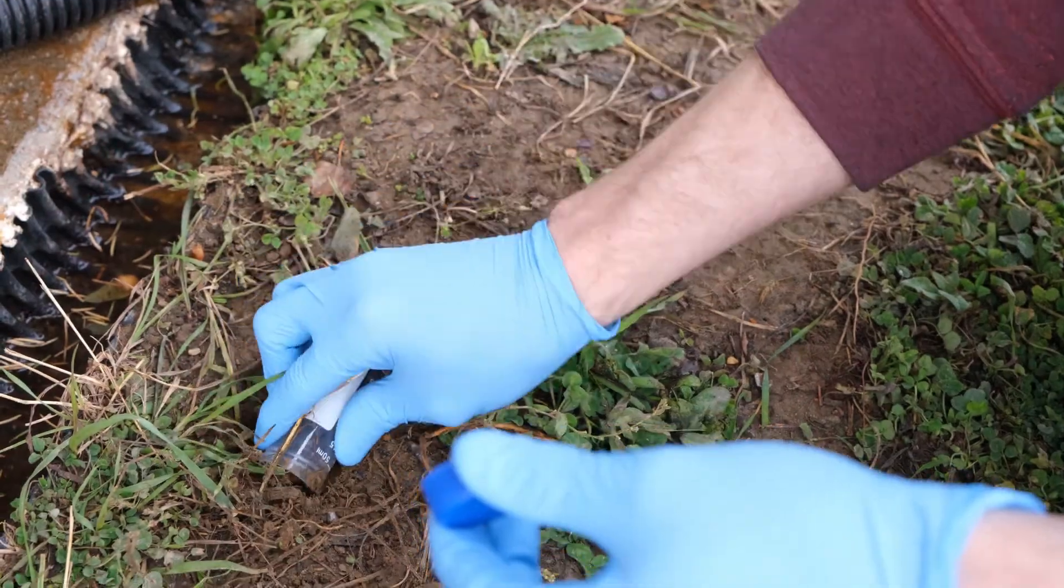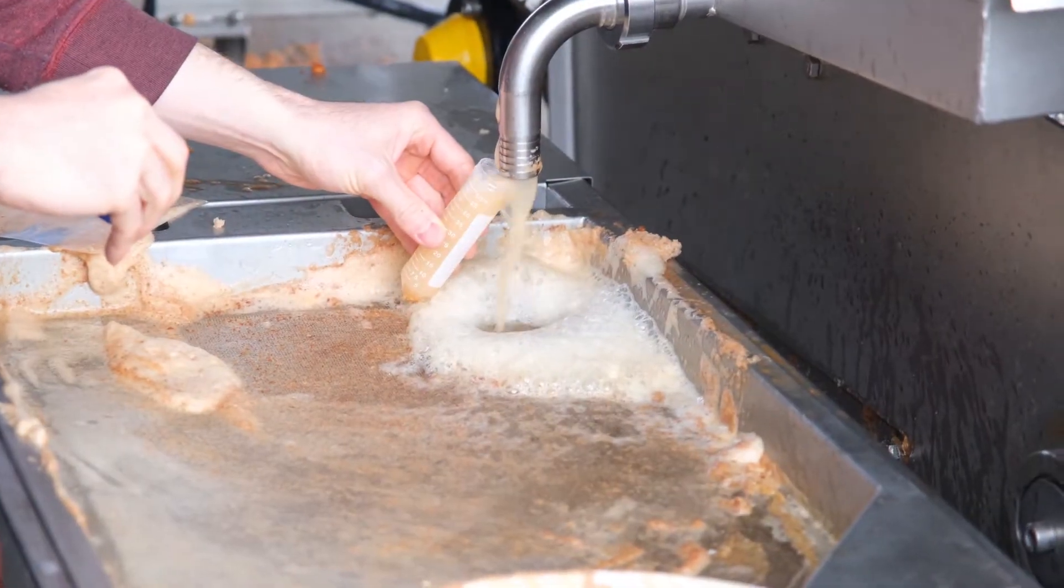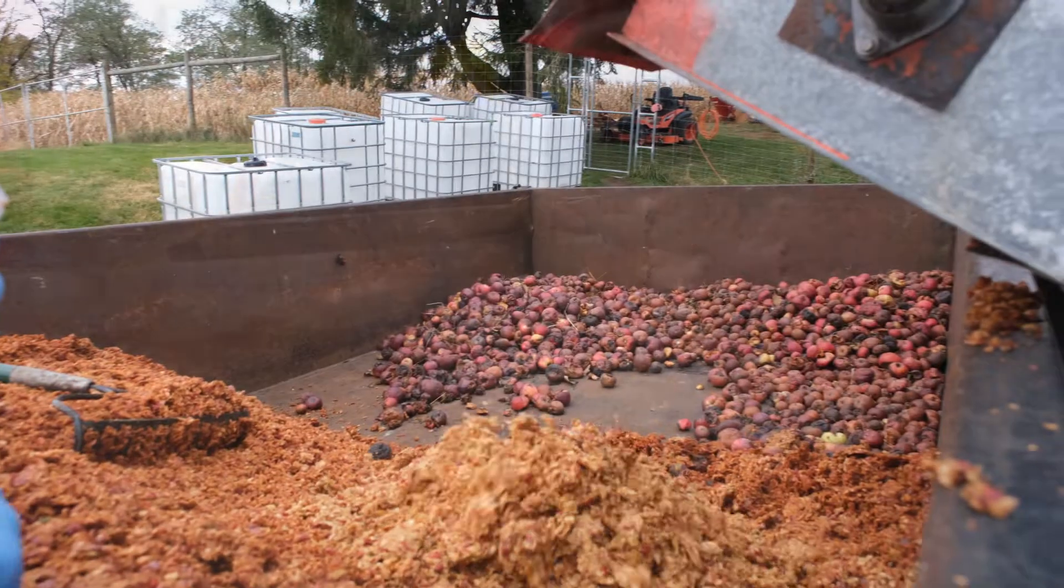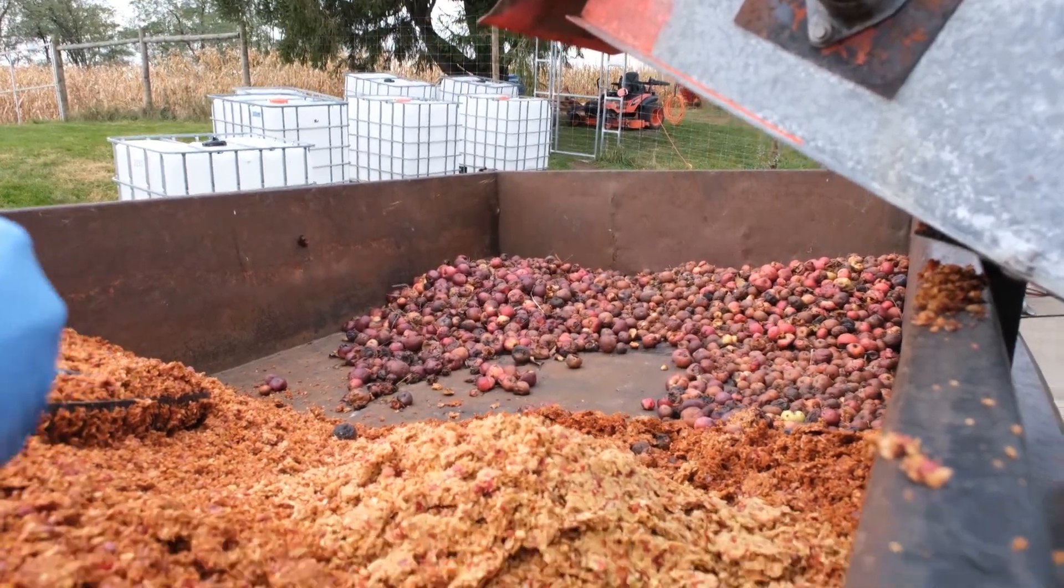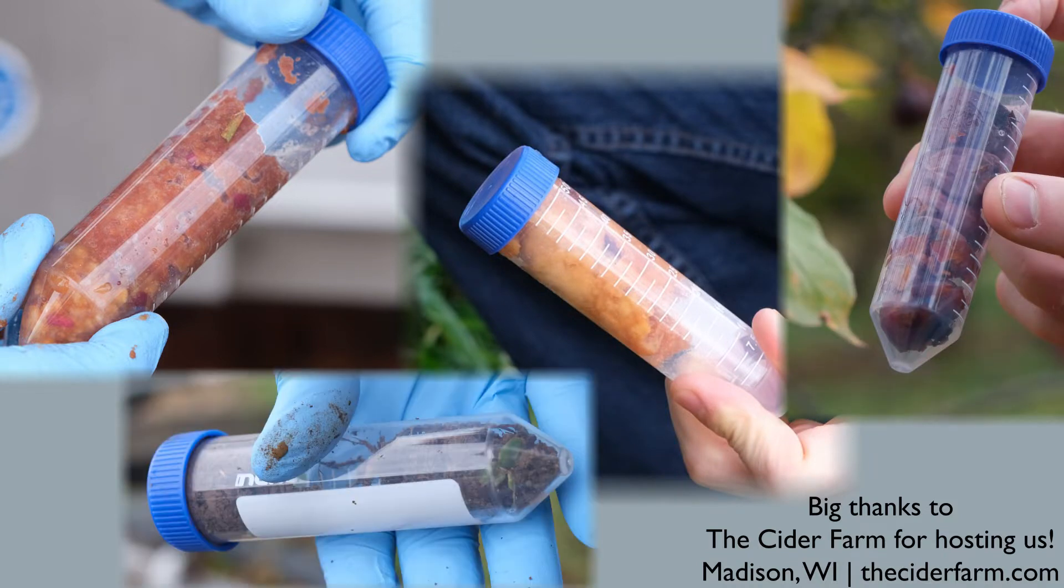Phages live inside their bacterial hosts, so we have to find the bacteria to find the phages of interest. We don't really know what microenvironment Zymomonas mobilis lives in, so we took samples of soil, fresh apples, rotten apples, pressed apples, pulped apples—we took lots of samples.